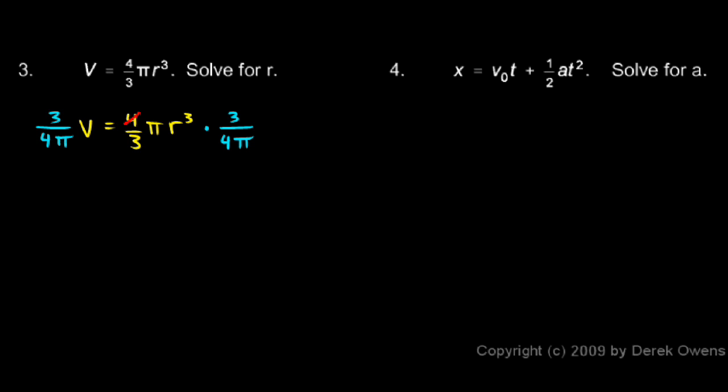And on the right, the fours cancel out, and the pi's cancel out, and the threes cancel out. So all I'm left with on the right is the r cubed.